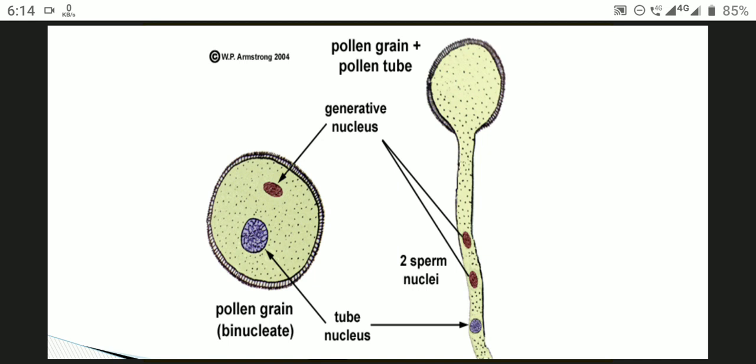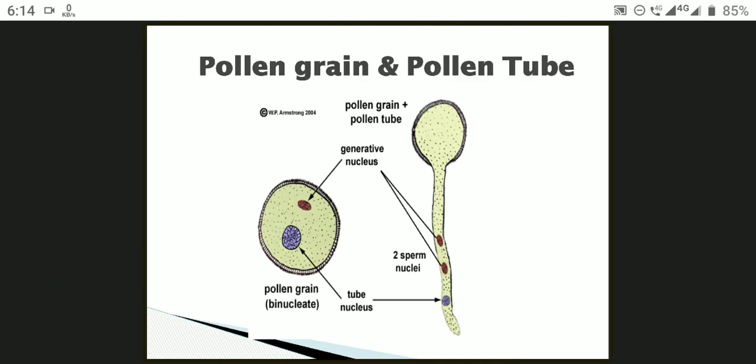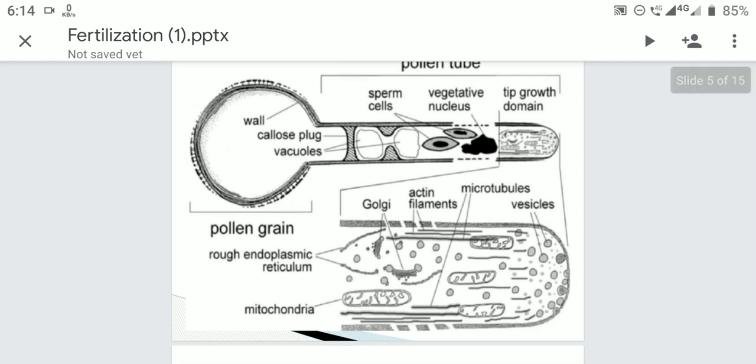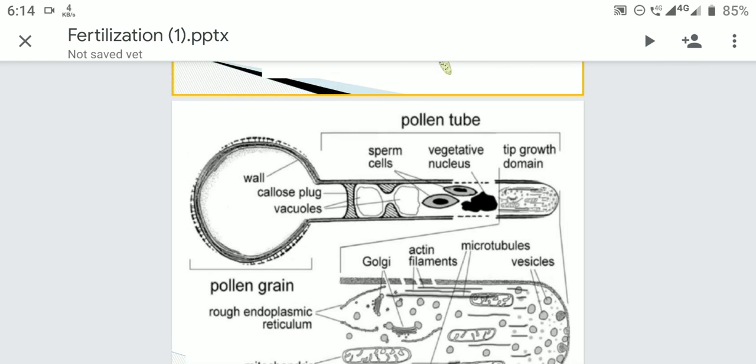When the pollen grain lands on the stigma, a recognition-rejection reaction occurs between the stigma and the chemicals present on the pollen grain. The stigma contains two types of structures, and first I will discuss the growth of the pollen tube.